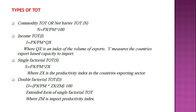The next type is Single Factorial TOT, represented by s. The formula is: s = (PX / PM) × Zx, where Zx is the productivity index in the country's exporting sector. PX is the price of exports and PM is the price of imports.